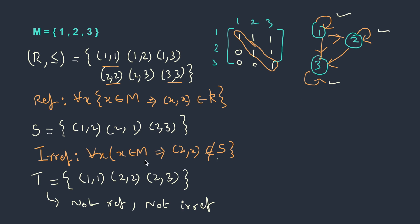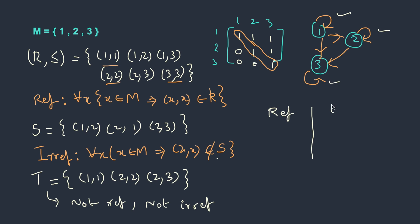For reflexive relations, examples include equality, less than or equal to, and greater than or equal to. For irreflexive relations, examples are strict less than and strict greater than.